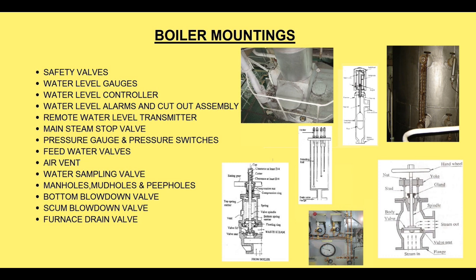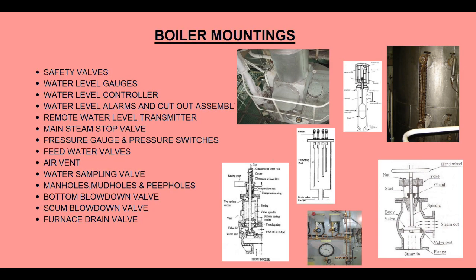Normally two water level indicators are fitted to each boiler, with a remote level indicator at a convenient control position. Blow down valves are fitted in pairs to the water drum to enable water to be blown from the boiler. This is to reduce the boiler water density.